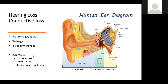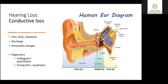Hearing loss — conductive loss. We're going to start with that. Remember, a conductive loss is a disorder in the auditory canal. So that's our ear canal over there. This is our ear canal. It's any disorder in the auditory canal, the eardrum, or the ossicles, which are our incus, malleus, and stapes.